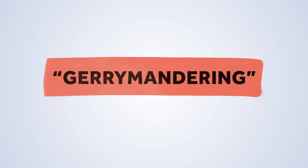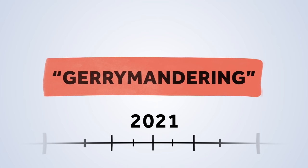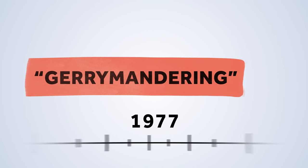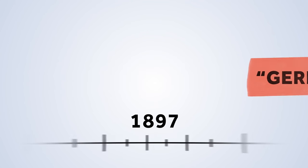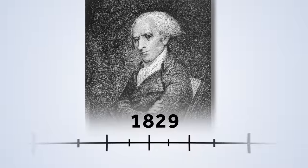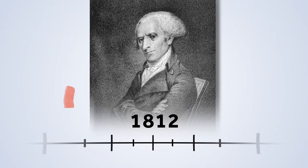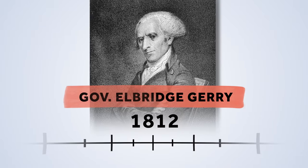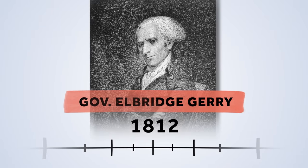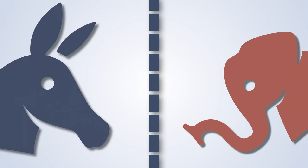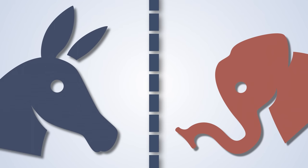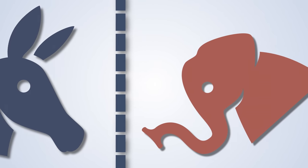That word has a long history in American politics, going all the way back to 1812 and Governor Elbridge Gerry of Massachusetts. But the bottom line is, it means drawing maps that purposefully give one party an advantage over the other.